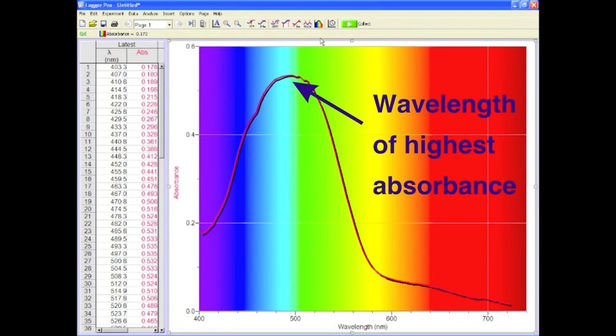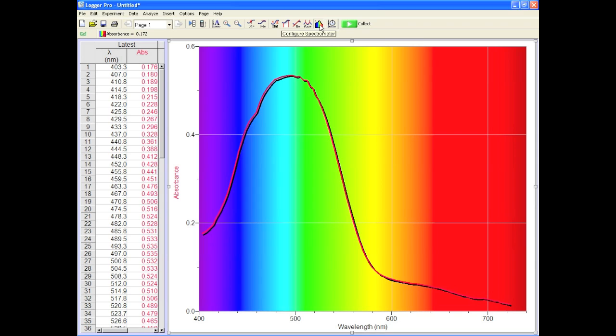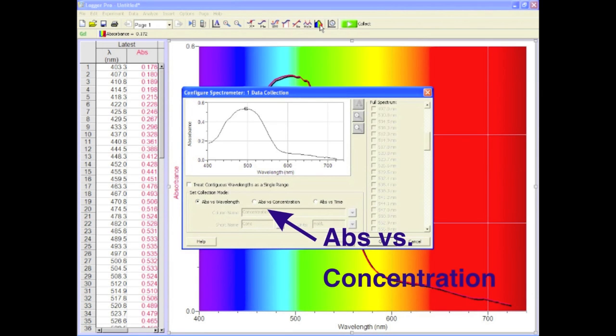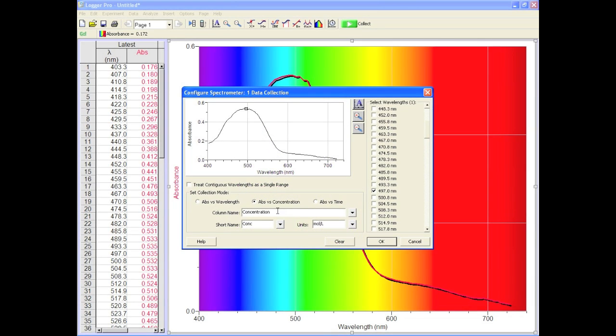Now, you want to choose the wavelength of highest absorbance, which is shown by the arrow. Press the Configure Spectrophotometer button, find and click on absorbance versus concentration and choose the best wavelength on the right. 407 nanometers looks good in this case. You should also fill in the boxes with the correct concentration units and stuff so your graph looks right. Done.